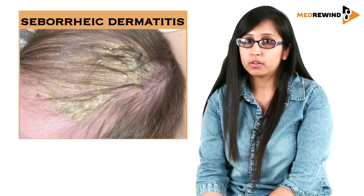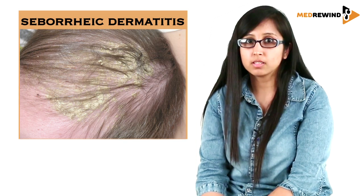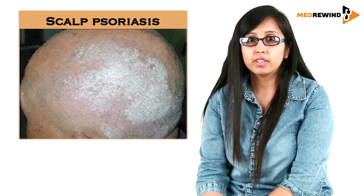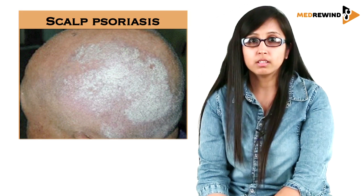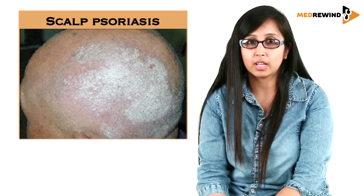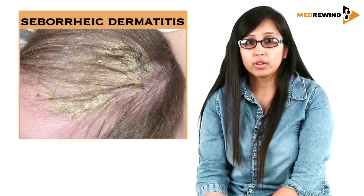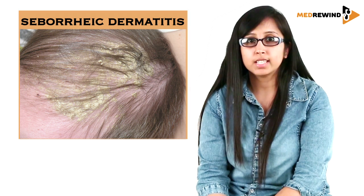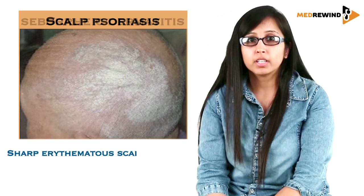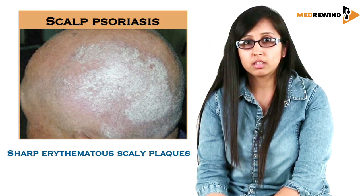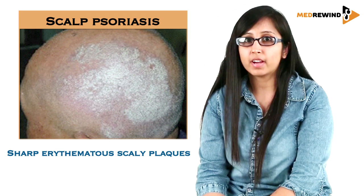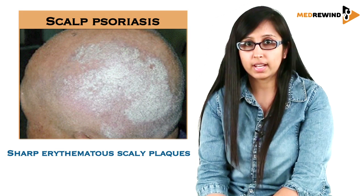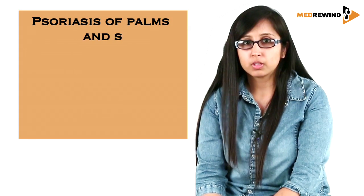Scalp psoriasis has to be differentiated from seborrheic dermatitis or seborrheic capitis. Both have scales, but there are distinguishing features. In seborrheic capitis, there is diffuse scaling and the scales are greasy and yellow. In psoriatic lesions, they are well-defined erythematous lesions with whitish scales overlying them.